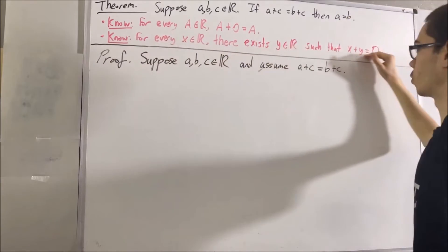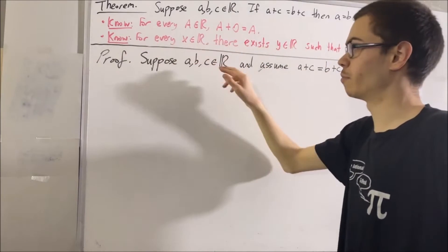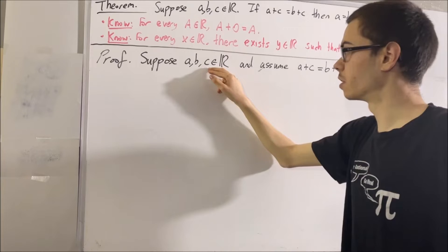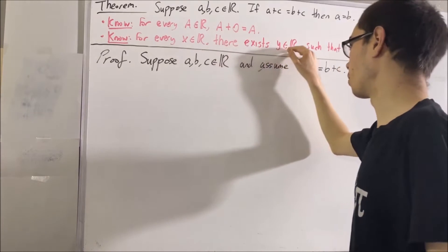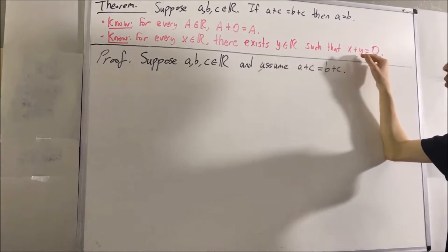Now, since this second statement works for every real number, it must work for the number C. So there exists a real number Y such that C plus Y is equal to 0.